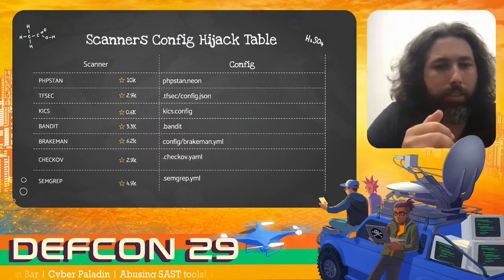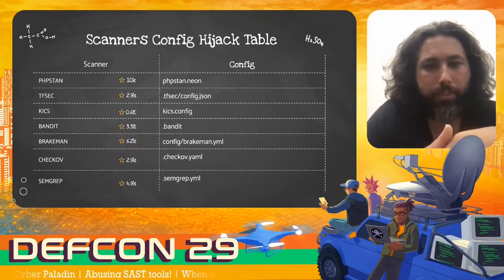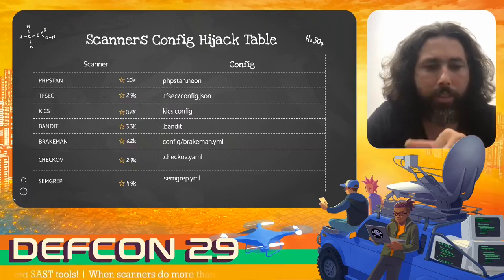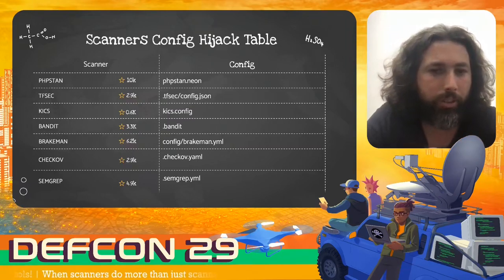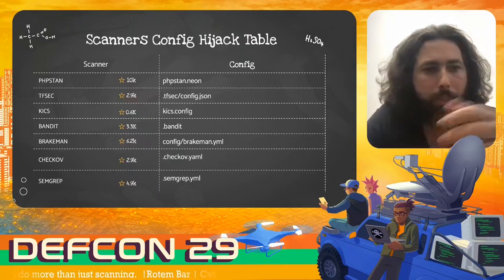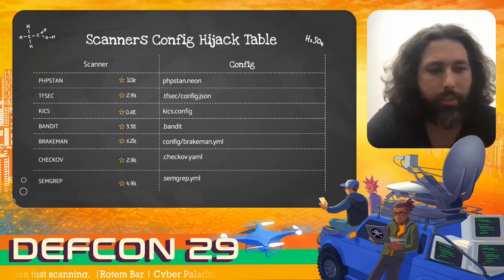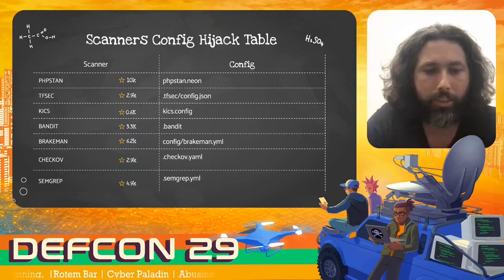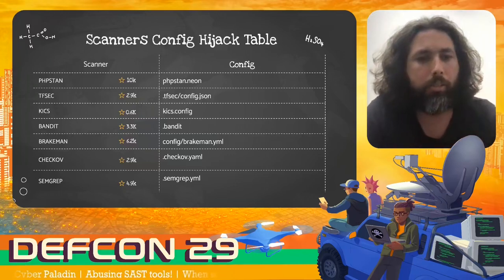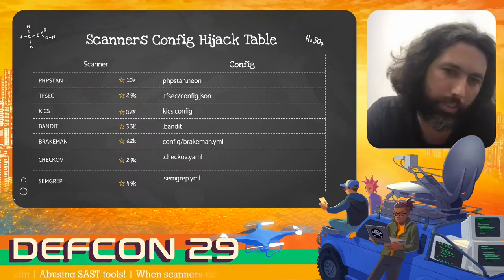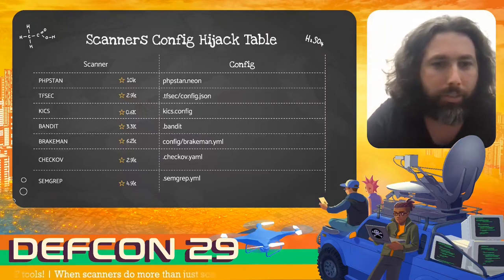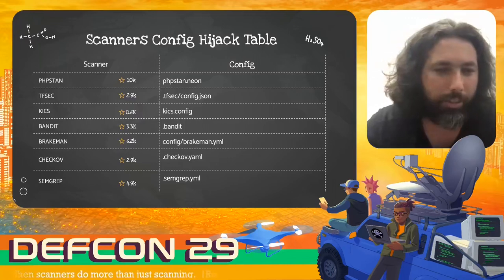After seeing what we can do with Checkov, I looked at other tools — and by definition or by design, lots of them give you the same ability. They have a default configuration file you can create to bypass or alter rules. We see phpstan, tfsec, kics, bandit, brakeman, Checkov, Semgrep, and I'm sure there are more. You put the default configuration and tell them to bypass rules, and they will. These tools have thousands of GitHub stars — they're widely used.